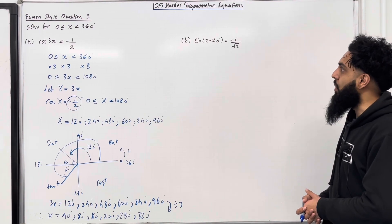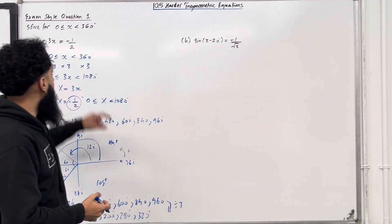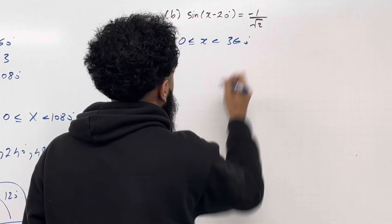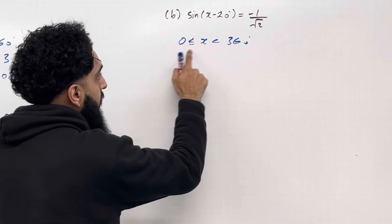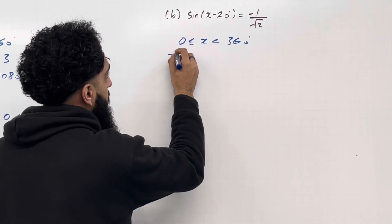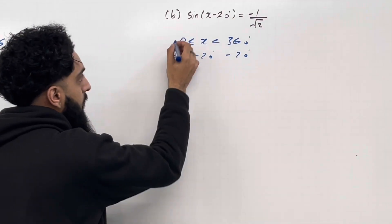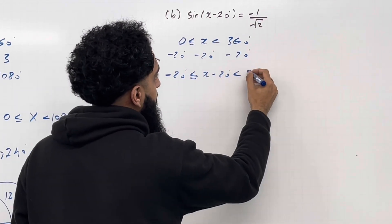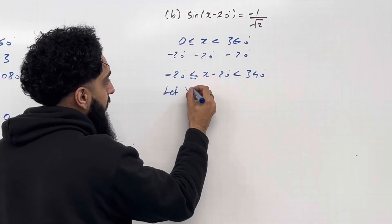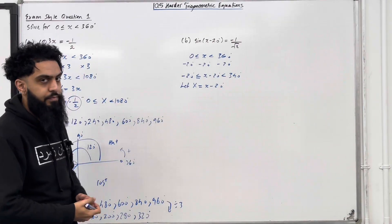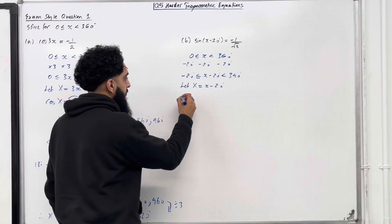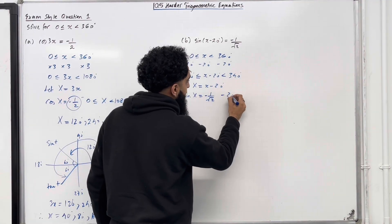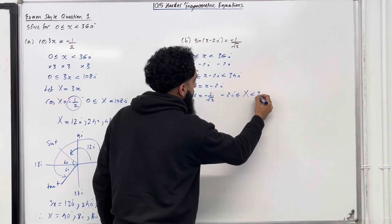Let's have a look at part B of exam style question 1. We start by writing down the interval: x is more than or equal to 0 but less than 360 degrees. We want to convert x into x minus 20, so we subtract 20 from each element of the interval. So we get minus 20 is less than or equal to x minus 20, which is less than 340 degrees. We let capital X equal x minus 20 degrees, and rewrite the equation as sine capital X equals minus 1 over root 2.